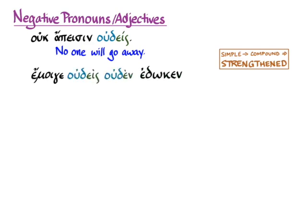Emoiga, oudeis, ouden, edokan. Again, we have a double negative here, which in English would cancel itself out, but in Greek it does not. This means 'to me, no one gave anything.'